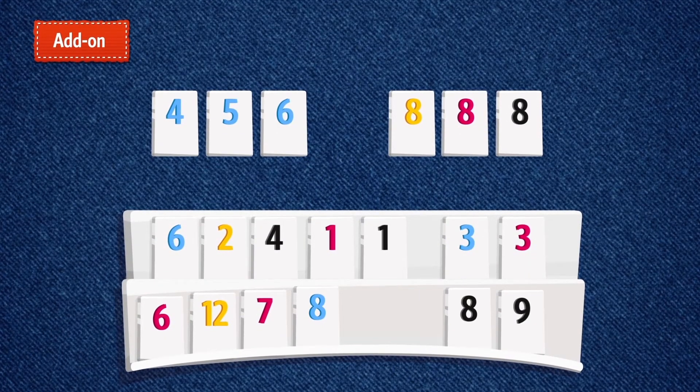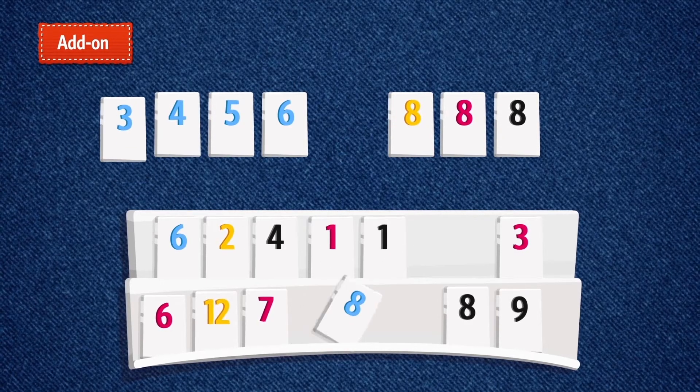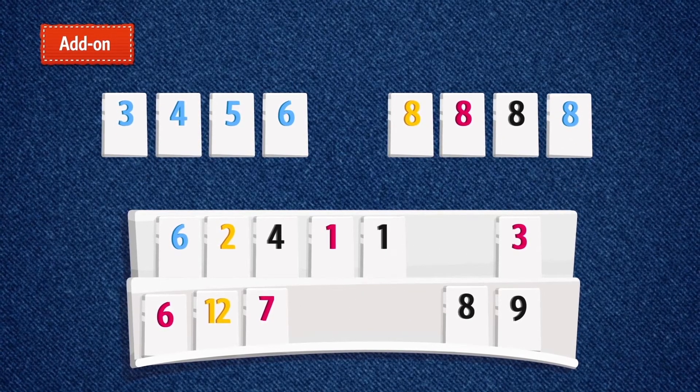Add on. Use the tiles on your rack to build onto one or more sets. Add the blue three to the run and the blue eight to the group of eights.